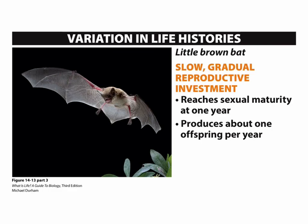The third reproductive strategy is slow, gradual reproductive investment. These animals tend to reach reproductive maturity at a much later age, and they produce fewer offspring at a time with larger gaps in between. Generally, they have a lot of time spent on each individual offspring to make sure that they reach maturity themselves. An example of this is seen in bats. Bats reach sexual maturity at about one year of age and produce small litters, usually one offspring per year. It takes a long time for that offspring to reach maturity and be weaned, especially compared to something like the mouse. These organisms are putting a lot of energy into maintenance for self and less energy into each reproductive event, giving them a longer lifespan overall and more reproductive events.